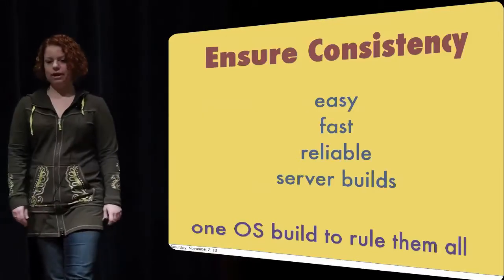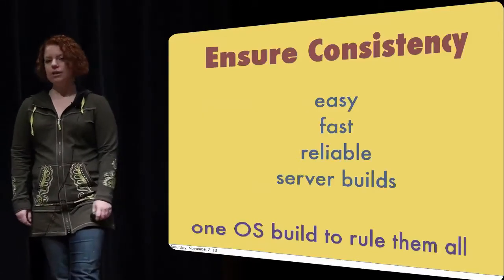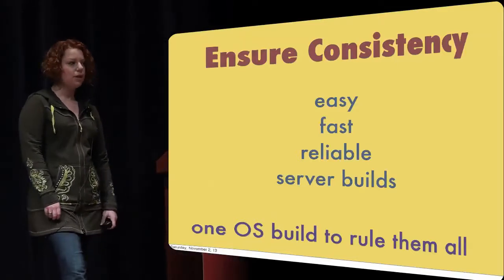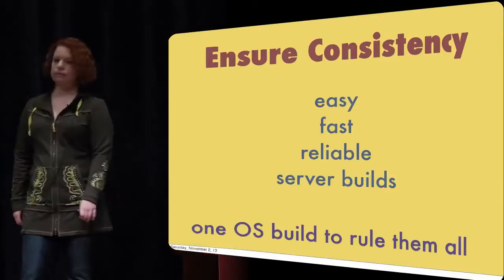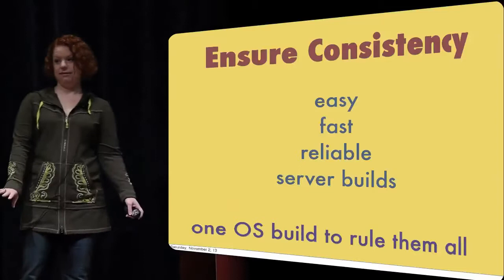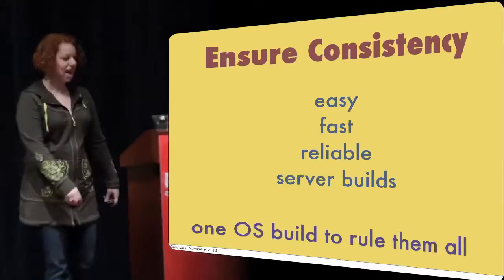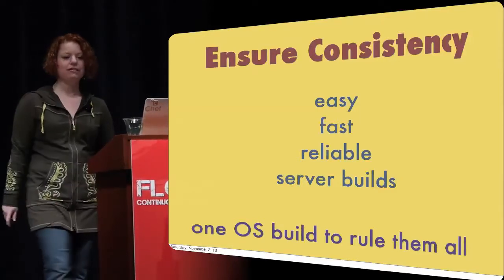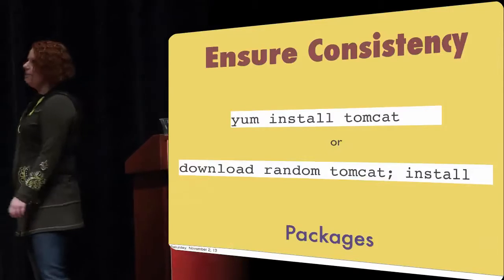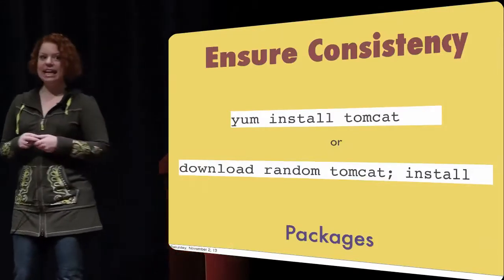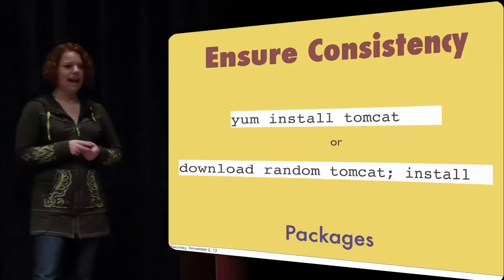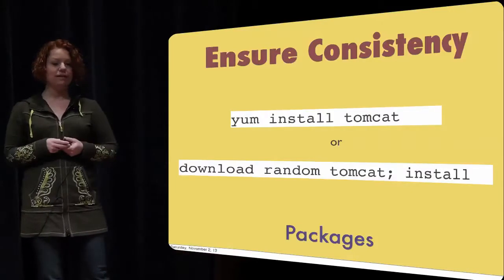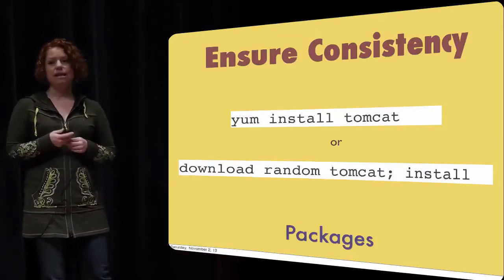Trying to troubleshoot package version mismatches at the OS level in production is the worst, because you're often not going to notice until you get to production and have a performance problem and don't know why. Then someone is writing scripts to compare package versions across 30 servers. Ensure consistency with packages. I have a real passion for package management because I hate it — I hate that I'm still stuck at this level of the operating system rather than doing beautiful deployments at the application level.